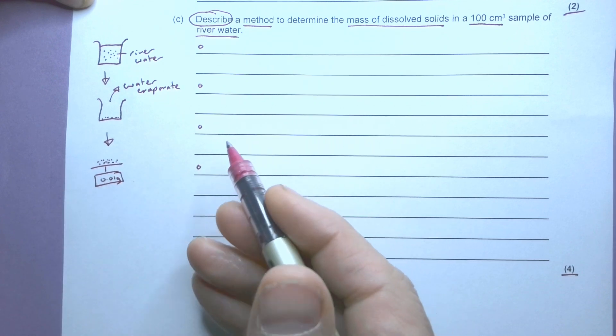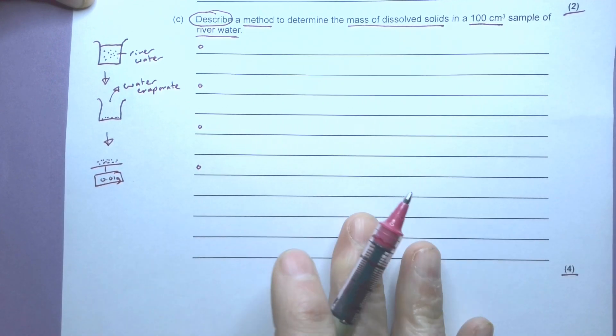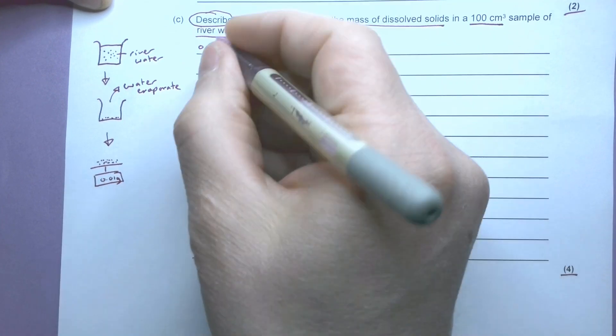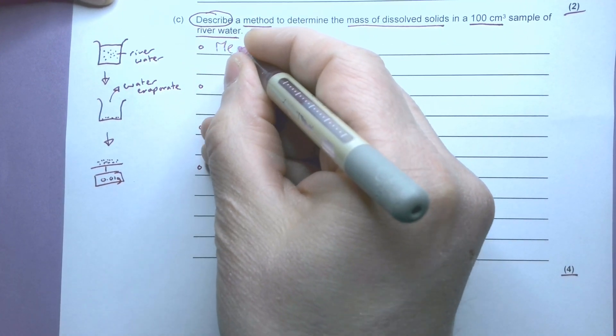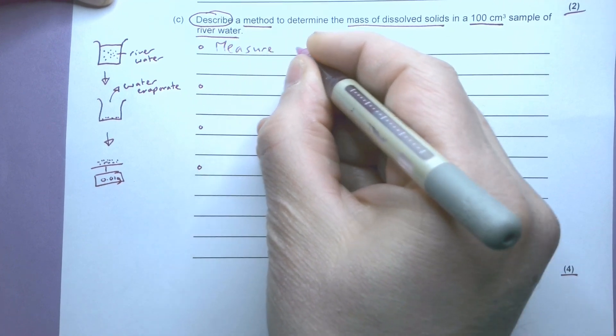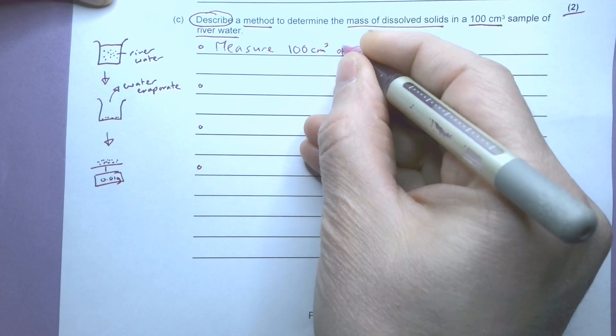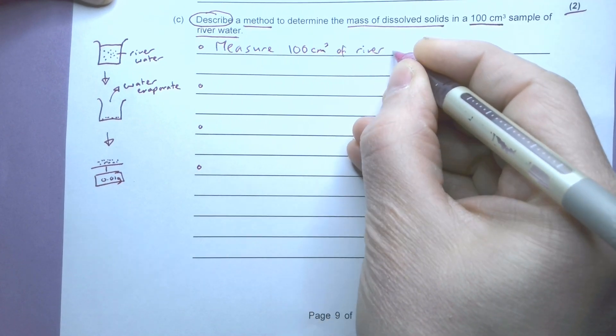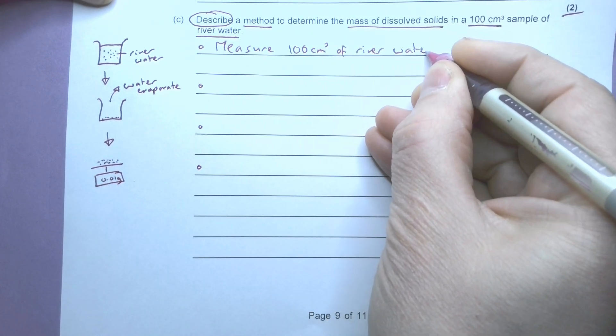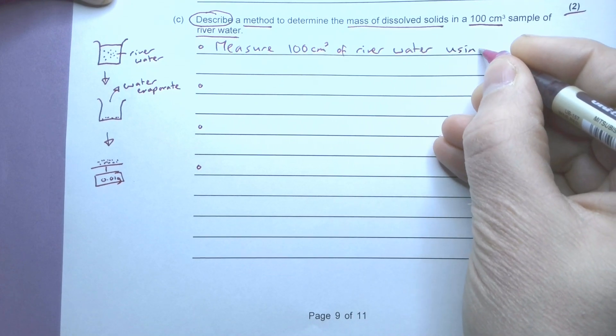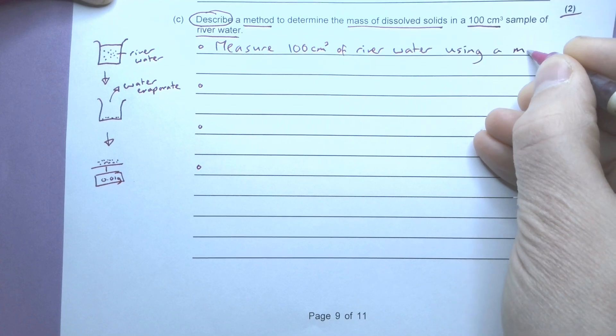So the first thing is I'm going to measure 100 centimeters cubed of water first of all, and to do that I'm going to make sure that I describe how I do it. So I'm going to measure 100 centimeters cubed of river water, and I'm going to say what I'm going to use as well - so using a measuring cylinder.